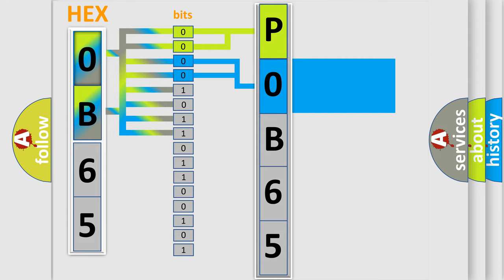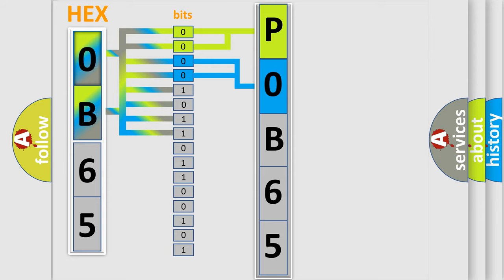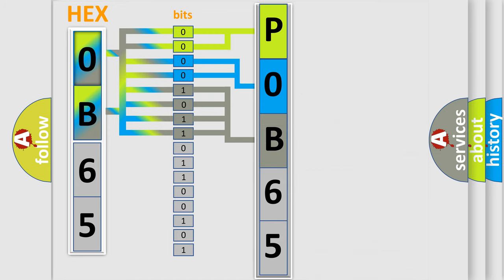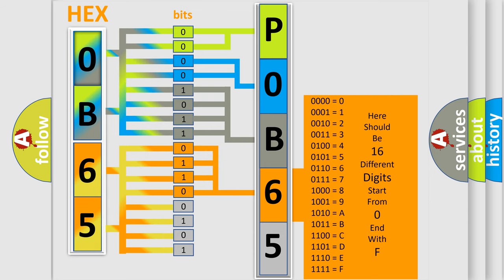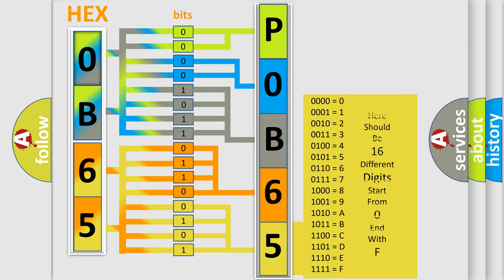The next two bits determine the second character. The last bits of the first byte define the third character of the code. The second byte is composed of a combination of eight bits. The first four bits determine the fourth character, and the combination of the last four bits defines the fifth character. A single byte conceals 256 possible combinations.